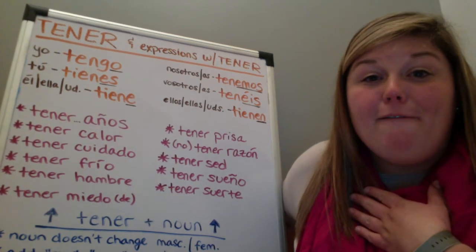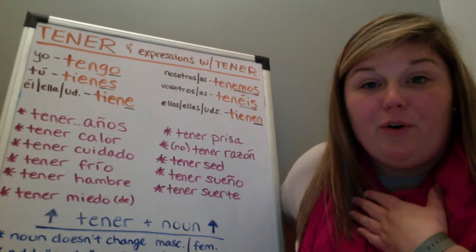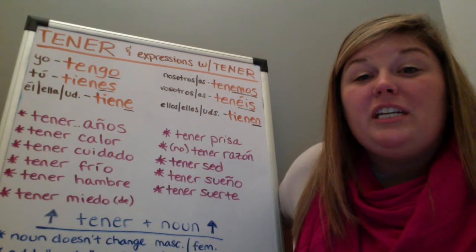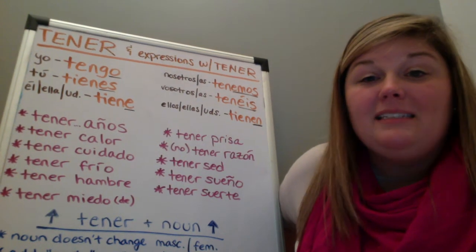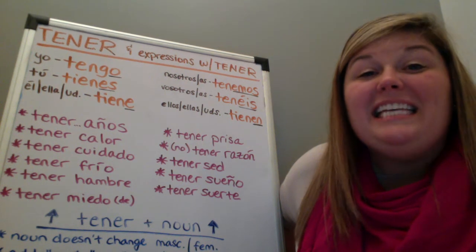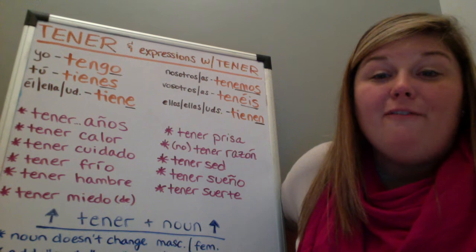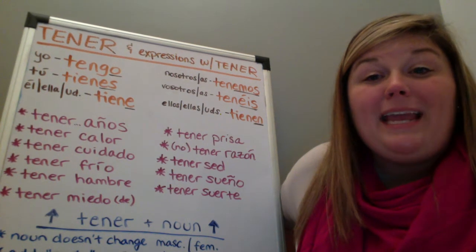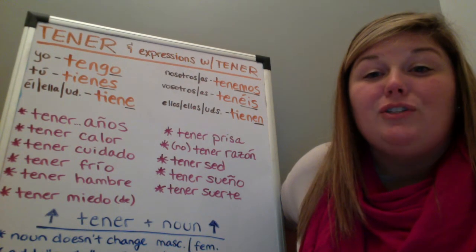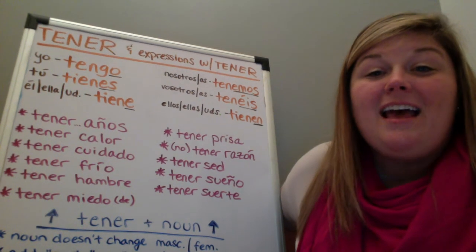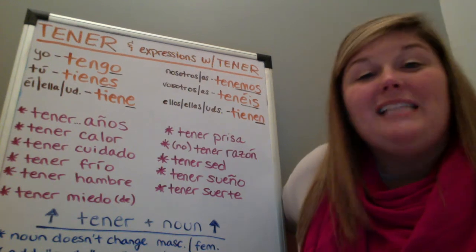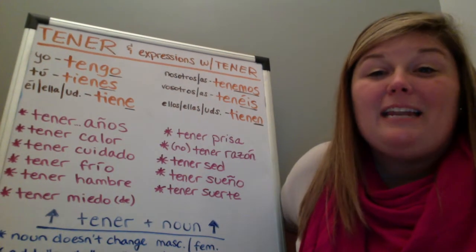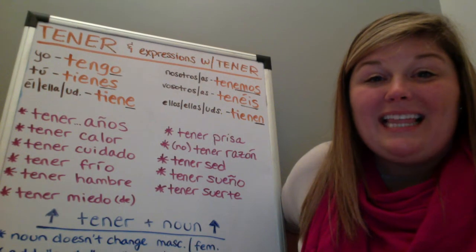If you want to say 'I have,' we say tengo — yo tengo. If we want to say 'you have,' tú tienes. He, she, or you formal has: él, ella, usted tiene. We have: nosotros, or nosotras, tenemos. You all in Spain have: vosotros, vosotras, tenéis. And they — a group of males, a group of females, or you all everywhere else in the world except Spain — is tienen: ellos, ellas, ustedes, tienen.